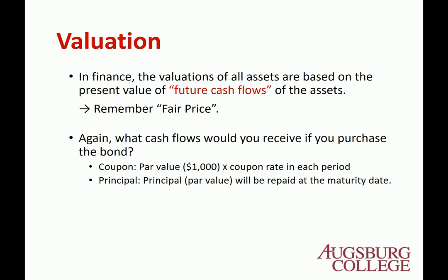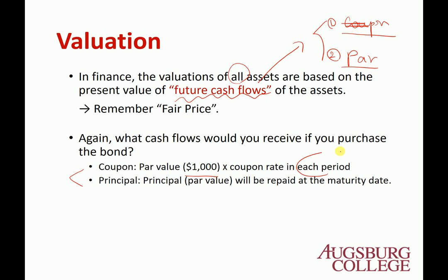To evaluate the bond, we find the fair price, which — as from chapter 4 on present value — is the sum of the present values of the future cash flows. In finance, all asset valuation is based on the present value of future cash flows. A bond has two components: the coupon (par value × coupon rate each period) and the principal (par value of $1,000 paid at maturity).